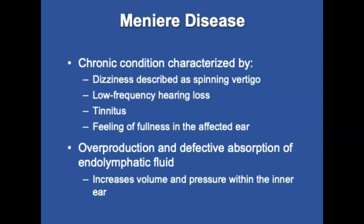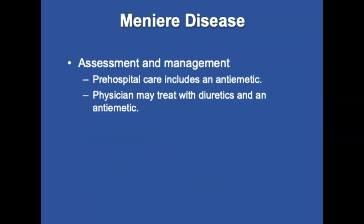Meniere's disease is a chronic condition of the inner ear characterized by spinning vertigo, low-frequency hearing loss, and a feeling of fullness in the affected ear. It involves overproduction and defective absorption of fluid, increasing volume and pressure within the labyrinth of the inner ear, disrupting the balance of fluid and electrolytes and damaging vestibular and cochlear hair cells. Early stage attacks last less than two hours with altered balance up to two days; as the disease progresses, symptoms last hours to days. Permanent tinnitus, moderate to severe hearing loss, and chronic unsteadiness may result. Pre-hospital care includes treating nausea and vomiting with an anti-emetic; physicians may also prescribe diuretics.